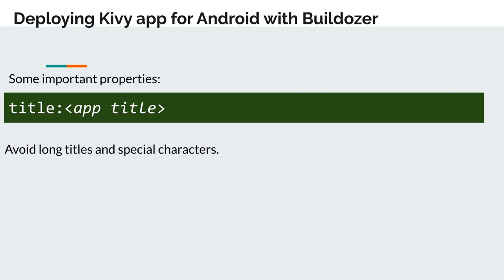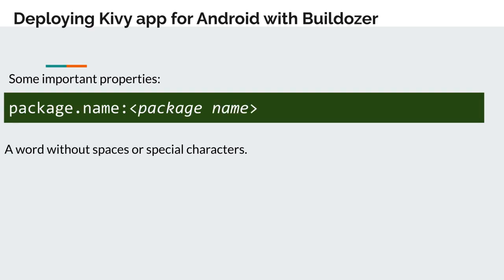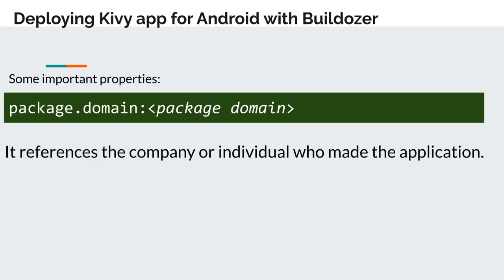Let's list some properties of the Buildozer.spec file. In the title option, the user defines the title of the application. Avoid long titles and special characters, as problems can occur on some platforms. In the option package.name, the user defines the name of the application package — it's just a single word with ASCII characters and numbers, and it cannot contain special characters. The package domain is a string that references the company or individual who made the application. The app name added to the domain is the app identifier for Android and iOS, so it must be chosen carefully. An example would be com.xyz.